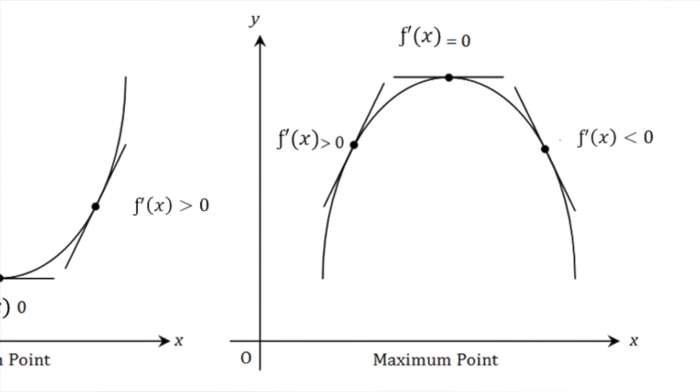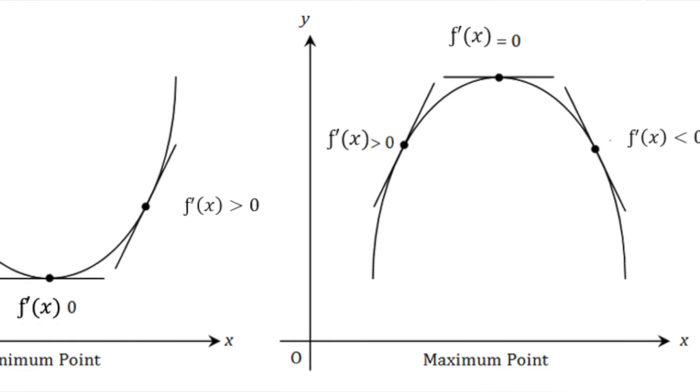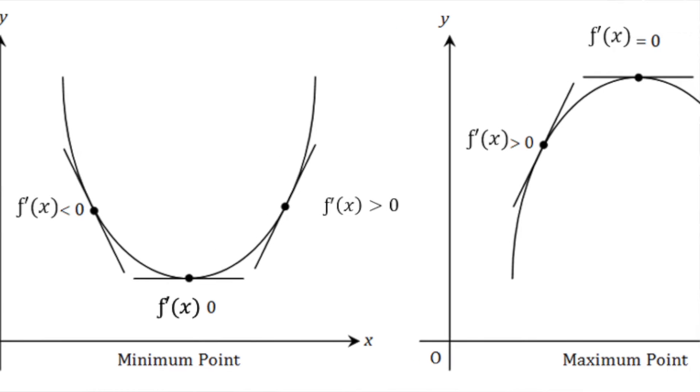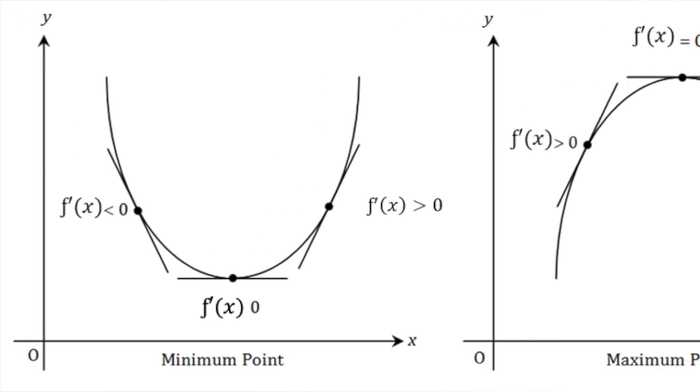These can mark points where the graph changes direction. If a curve changes from an increasing to decreasing direction, it is said to be a maximum stationary point. Alternatively, if the graph changes from a decreasing to increasing direction, it is said to be a minimum stationary point.